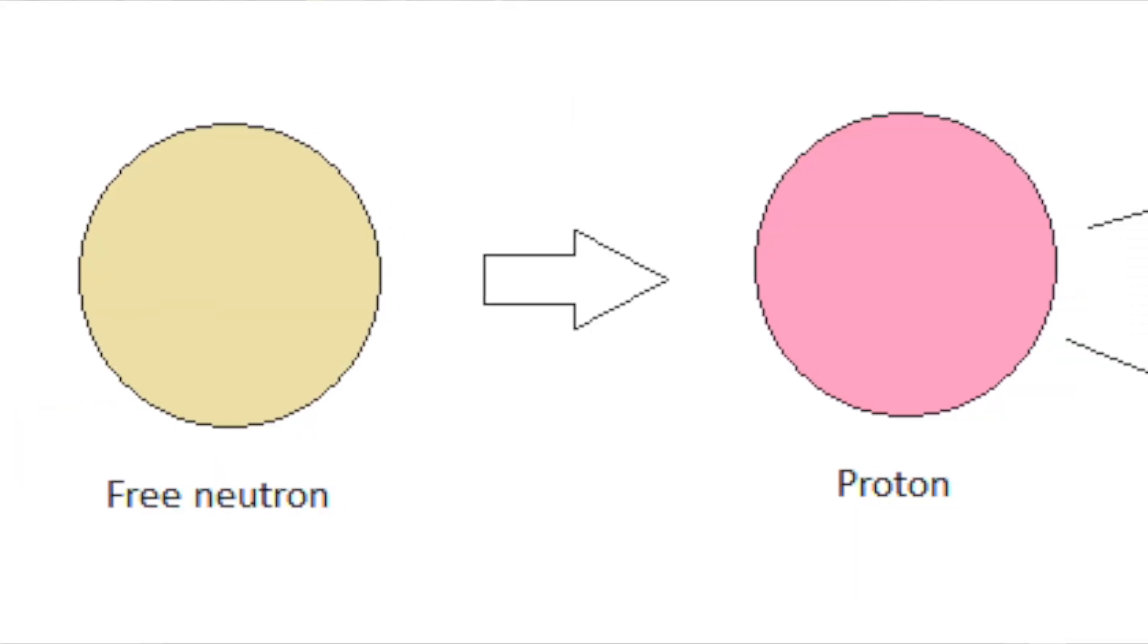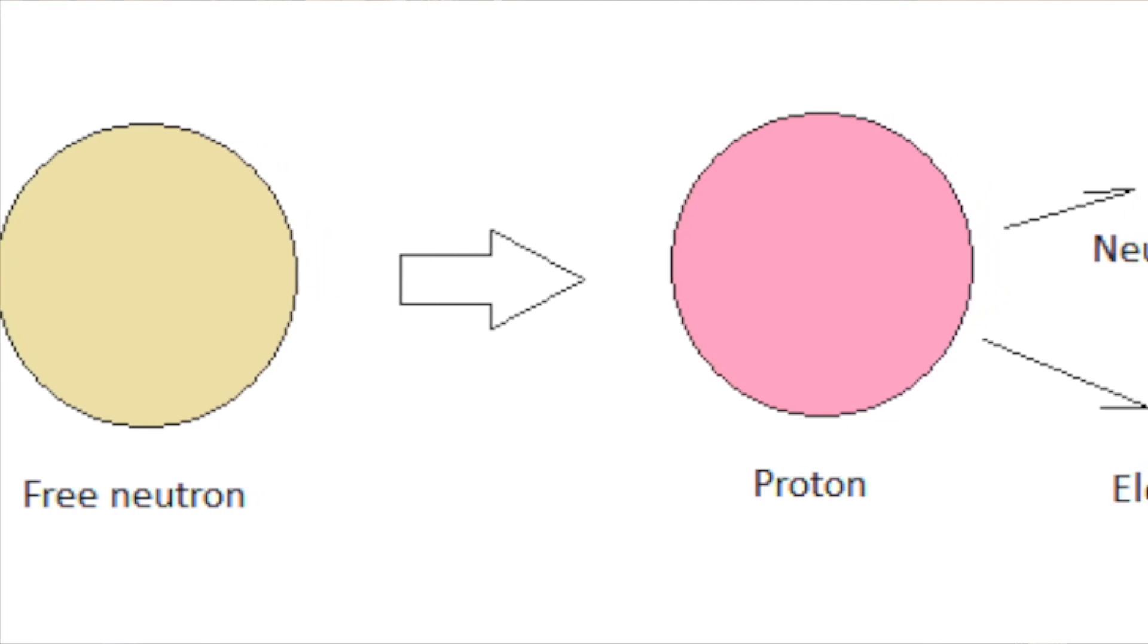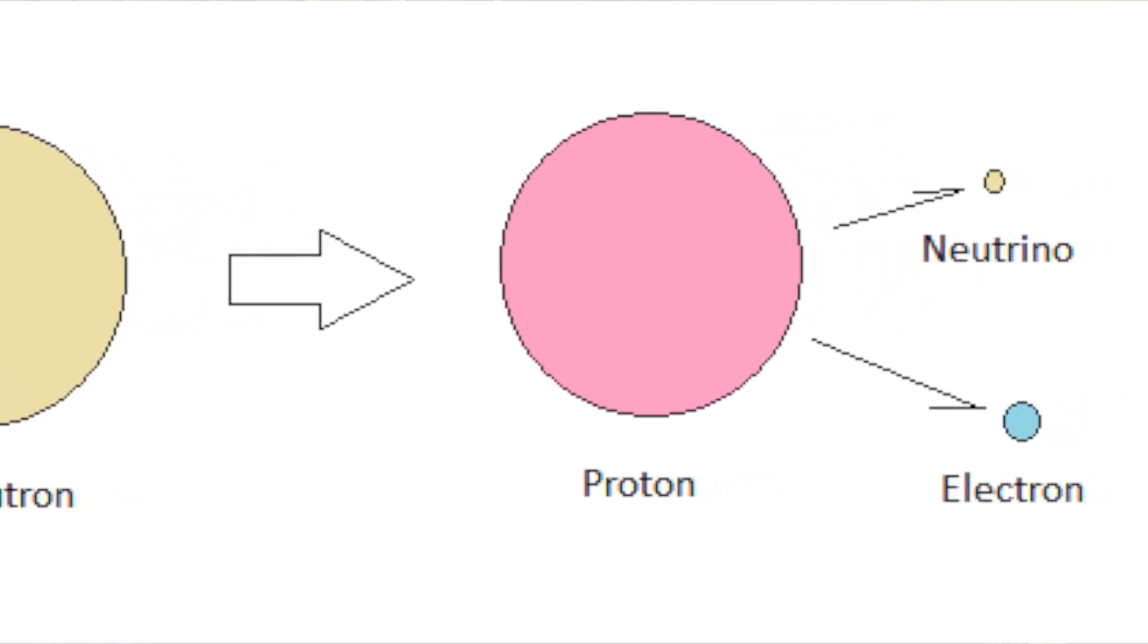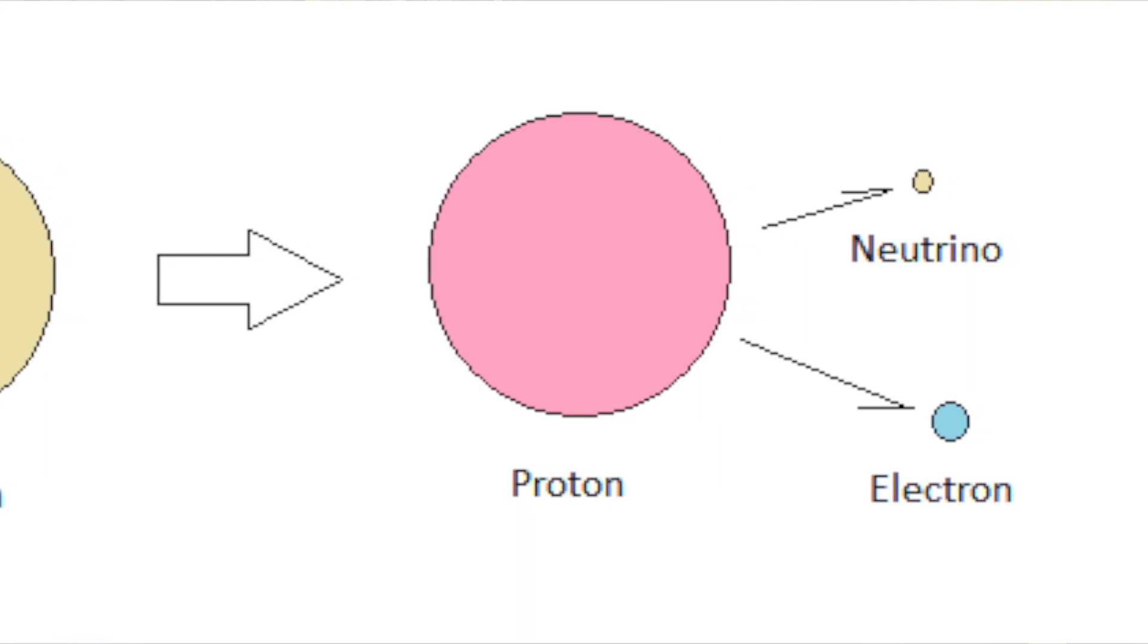The angry photographer doesn't mention that when free neutrons decay into protons, they release electrons, which he claims don't exist.